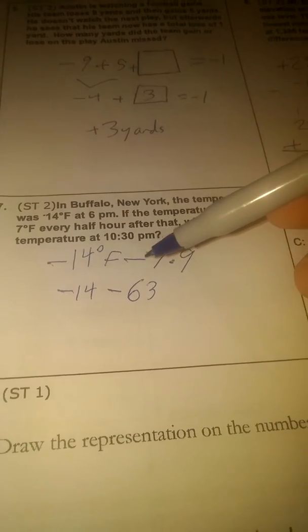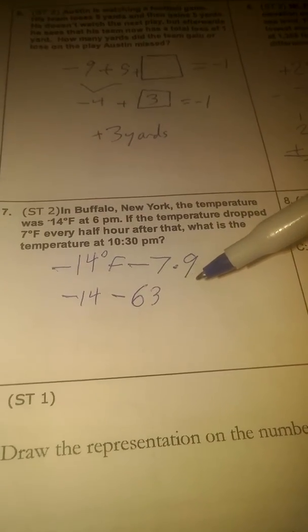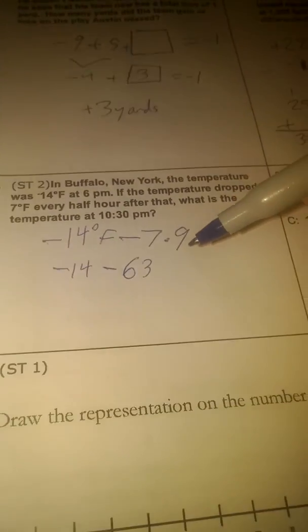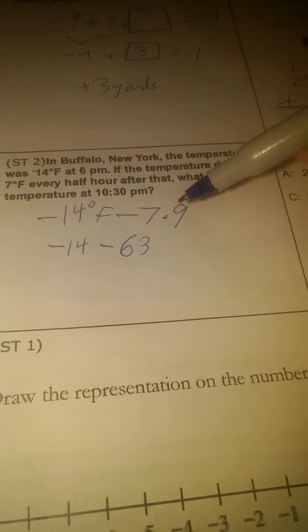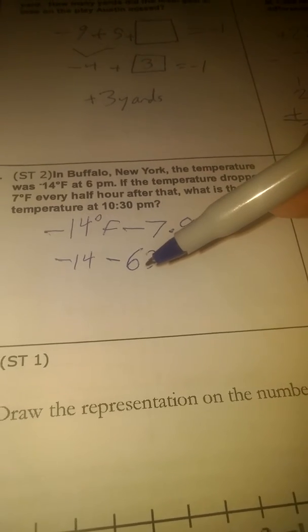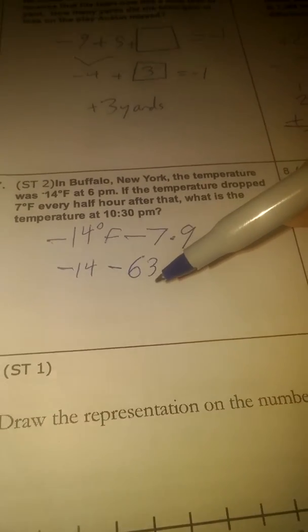So we're going to be negative 14 minus 7 times 9. In this situation, we've got the order of operations. We do the more complex operation first, which is the multiplication. To do 7 times 9, we get negative 14 minus 63.